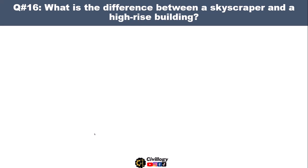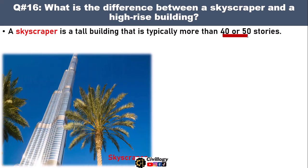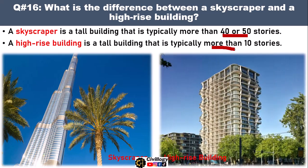Question number sixteen: what is the difference between a skyscraper and a high-rise building? A skyscraper is a tall building that is typically more than 40 or 50 stories — Burj Khalifa is the best example. Whereas a high-rise building is a tall building that is typically more than 10 stories; any large building more than 10 stories can be called a high-rise building.